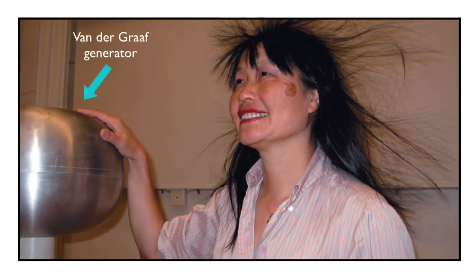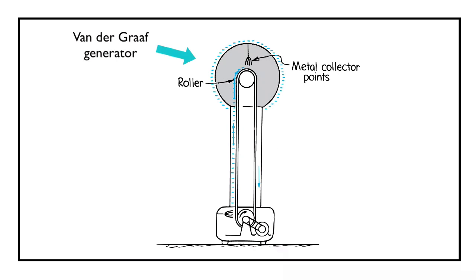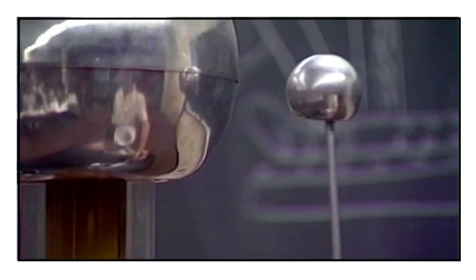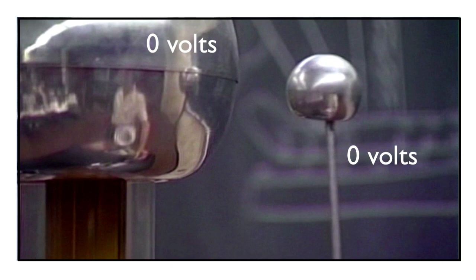Here's a Van de Graaff generator, with its dome charged to an electric potential of 5,000 volts. Here's a grounded metal sphere at 0 volts. Because of the electric potential difference, charge can flow from one to the other. And that's it. No continuing flow of charge, because there's no longer an electric potential difference.